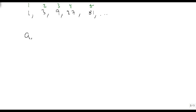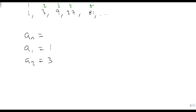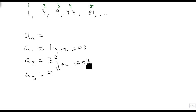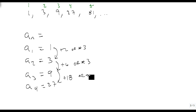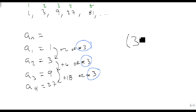We know that our a sub n equals something. Well, a sub 1 equals 1, and a sub 2 equals 3. To go from here to here, we could add 2, or we could multiply by 3. To go to a sub 3, which is 9, that's adding 6, or multiplying by 3. And to go to 4, which is 27, that's adding 18, or multiplying by 3. Notice that we're constantly multiplying by 3, which means it looks like we have 3 to a power.